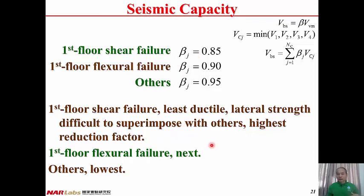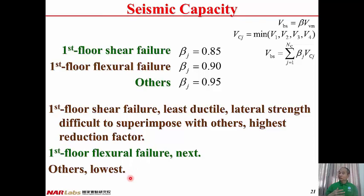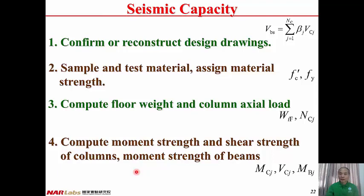The rationale: column shear failure is the least ductile mode, making it hardest to superimpose with other members' strength, so the highest reduction (lowest beta = 0.85) applies. Column flexural failure has better ductility, so beta = 0.90. Beam flexural failure is the most ductile mode — it is easiest to superimpose — so it has the lowest reduction factor at beta = 0.95. Combining lateral strength of all column lines with their reduction factors gives the ultimate base shear strength, which is the seismic capacity of the structure.